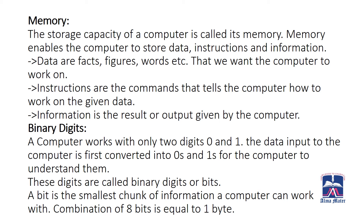A computer works with only two digits: zero and one. The data input to the computer is first converted into zeros and ones for the computer to understand. Basically, a computer understands the language of zeros and ones. These digits are called binary digits, or bits. A bit is the smallest chunk of information a computer can work with. A combination of eight bits is equal to one byte.